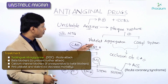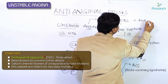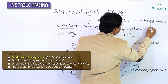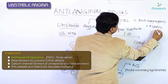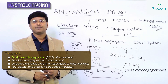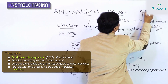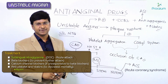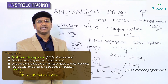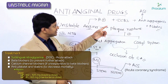To decrease mortality on a long-term basis, the patient is started on anti-aggregants, because unstable angina is mainly due to platelet aggregation. In order to reduce mortality, we start anti-aggregants and also statins. Aspirin is started at a loading dose of 162 to 325 milligrams and then continued at a dose of 81 to 162 milligrams.